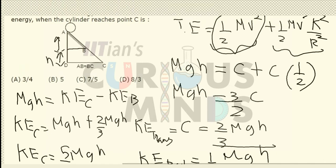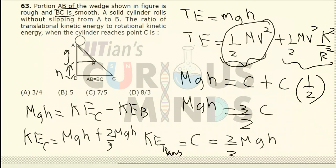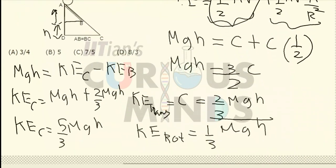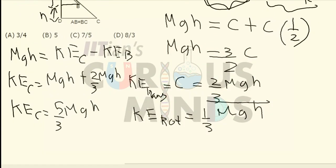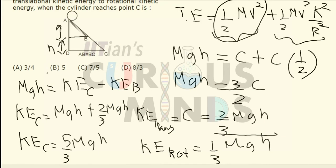We have to find the ratio of translational kinetic energy to rotational kinetic energy at point C. The translational kinetic energy is 5/3 mgh and the rotational is 1/3 mgh, so the ratio comes out to be 5:1.